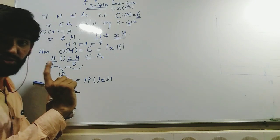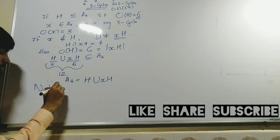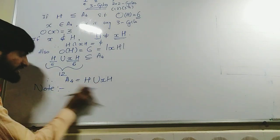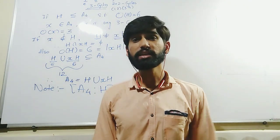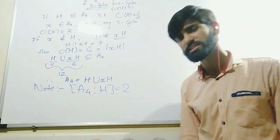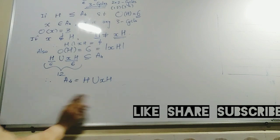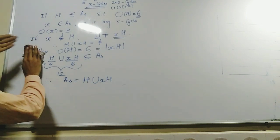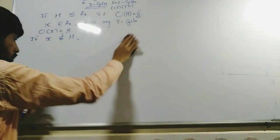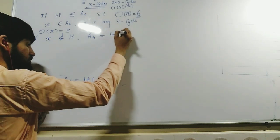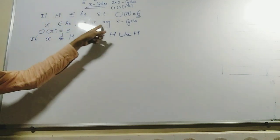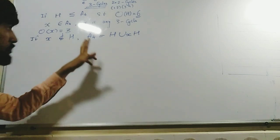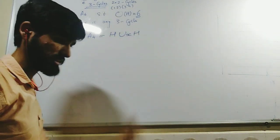You can also go through this using the index. H has index 2 in A4, which implies there will be only two distinct cosets of H in A4, and these are H and xH. So now we have confirmed that A4 equals H∪xH. This holds when x is any 3-cycle that is not an element of H.